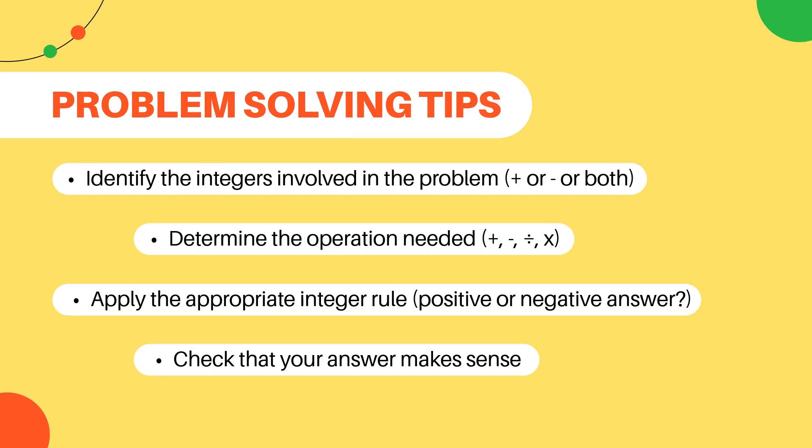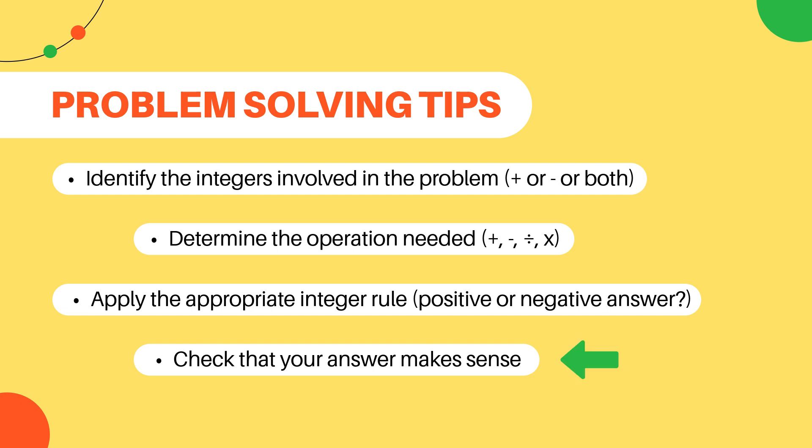Here are some tips for solving real-life integer problems rather than just doing basic calculations. 1. Identify the integers involved in the problem — for example, does the problem require positive or negative numbers, or both? 2. Determine the operation needed — will it use addition, subtraction, multiplication, or division? 3. Apply the appropriate rule based on the operation and the signs of the integers to find out if your answer should be positive or negative. 4. Check your answer to make sure it makes sense in the context of the problem.